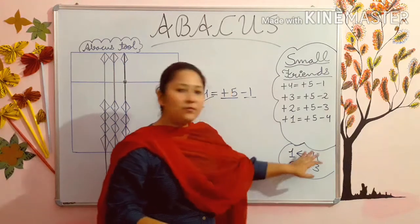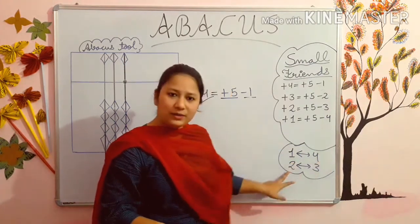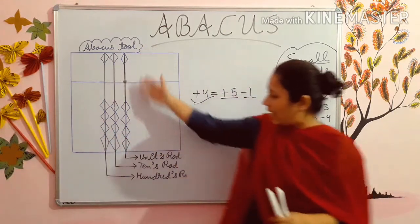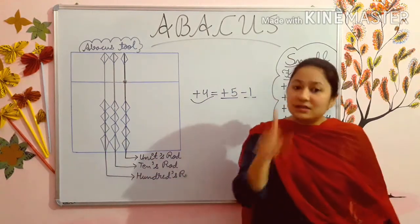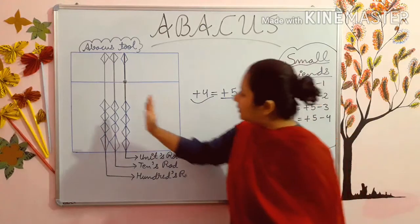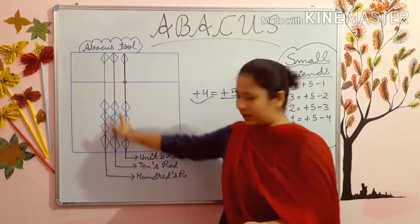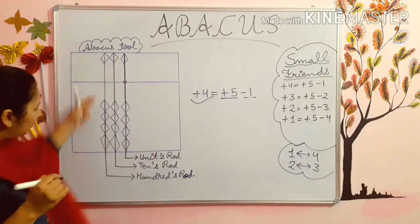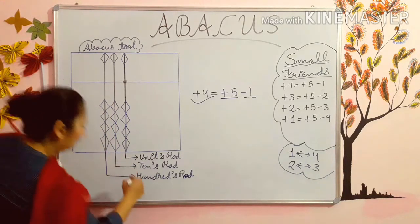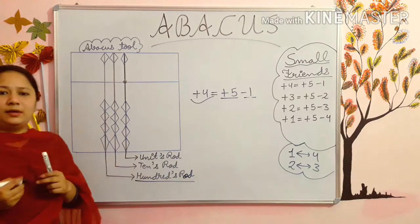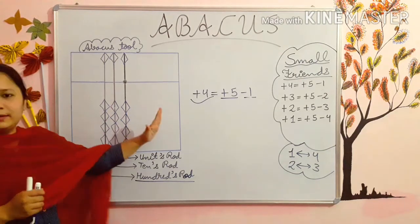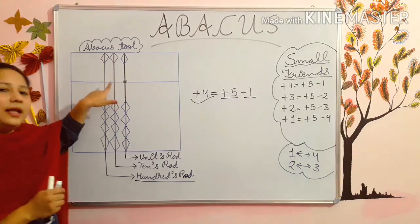One more thing I told you — the friends. 1 is the friend of 4 and 2 is the friend of 3. I hope students you are remembering everything. Now I have made the abacus tool. From the starting video I have told you the mid-rod of the abacus tool is called units rod. The rod just besides the units rod is the tens rod, and the third rod is the hundreds rod. From which rod do you start your calculation? From hundreds rod. You start your calculations from here — first in this rod, then in this rod, then in this rod.